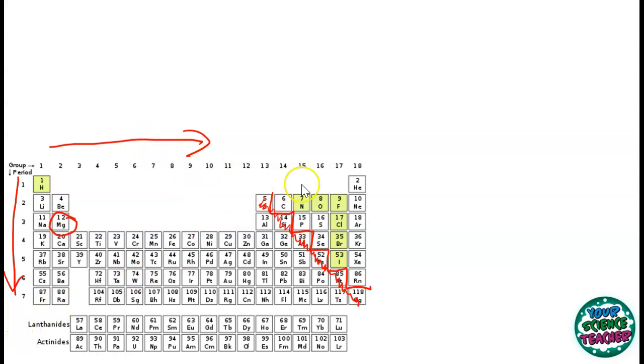Now, these elements that are kind of shaded in, those elements like boron and silicon, they actually show properties of both metals and non-metals and they're called metalloids.